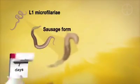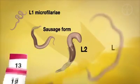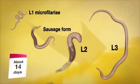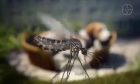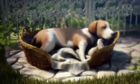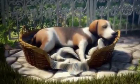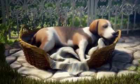Inside the insect, over a period of about 14 days, the L1 larvae develop into the infective L3 stage larvae by molting twice. This mosquito is now a new vector of heartworm infection, threatening the lives of dogs and cats in endemic areas.